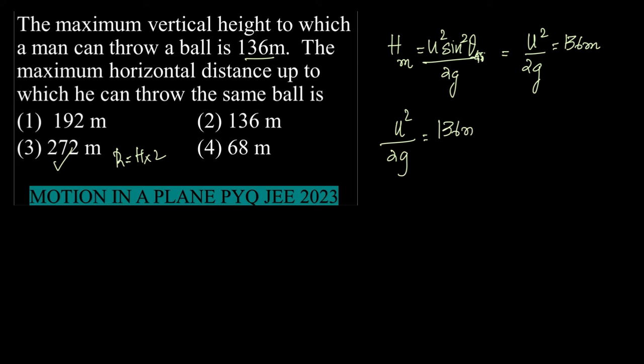Now let's see what is range. We have R = u² sin2θ / g, and the maximum value is obtained when theta is equal to 45 degrees, which is sin90, which is actually equal to u²/g. The maximum horizontal distance, the maximum range, is u²/g.